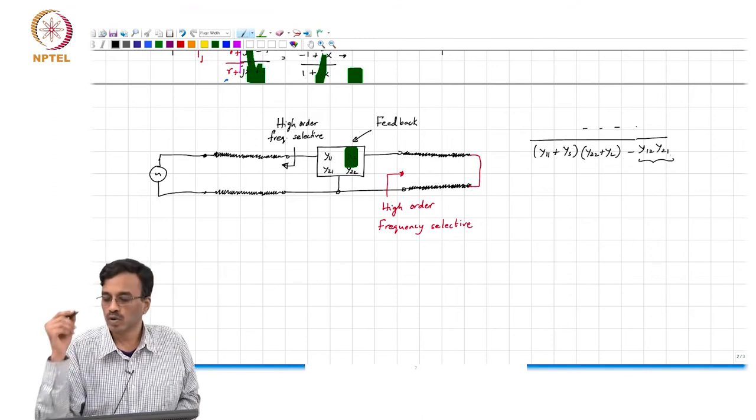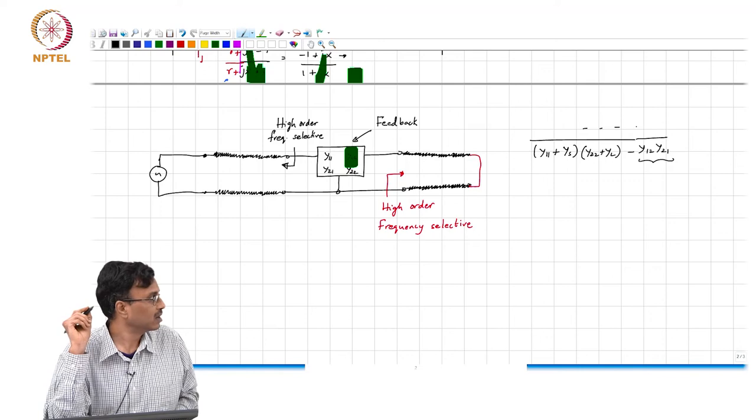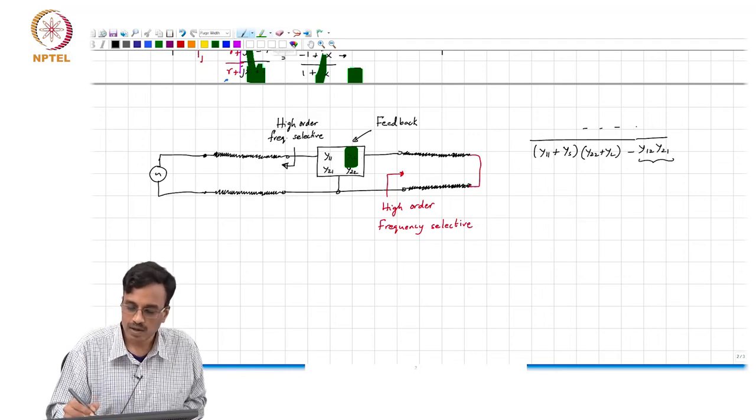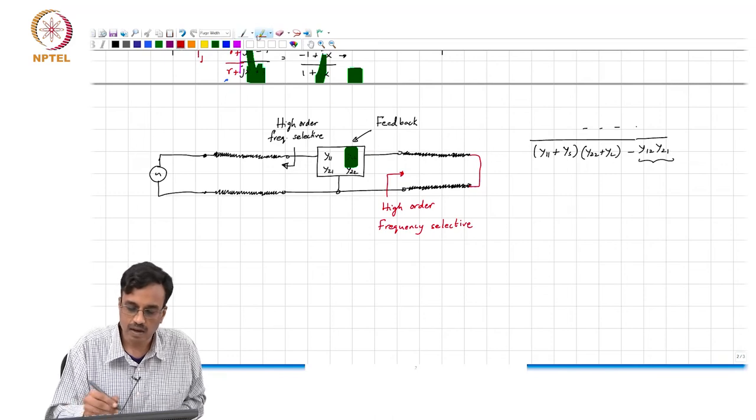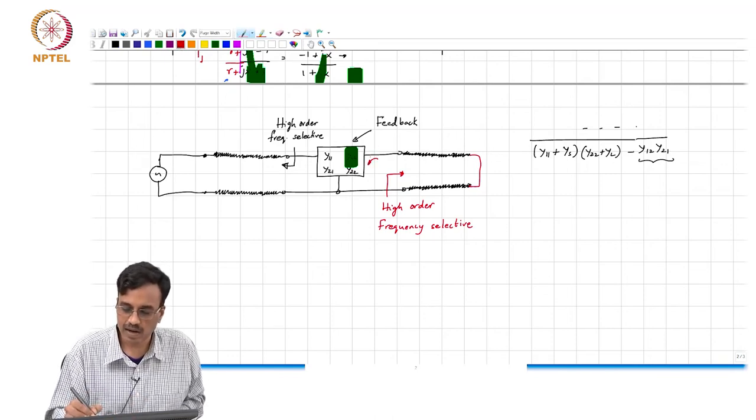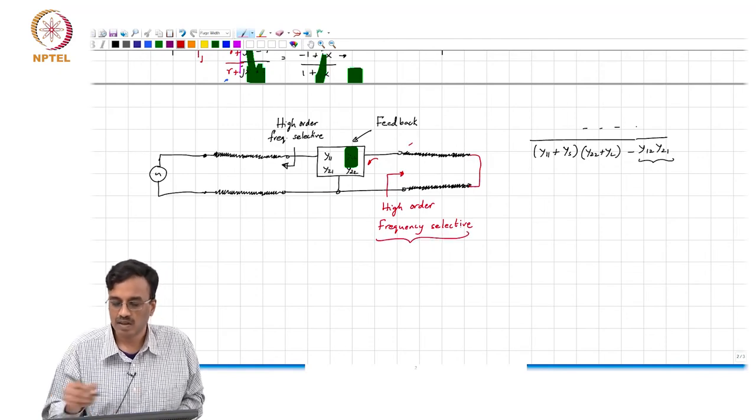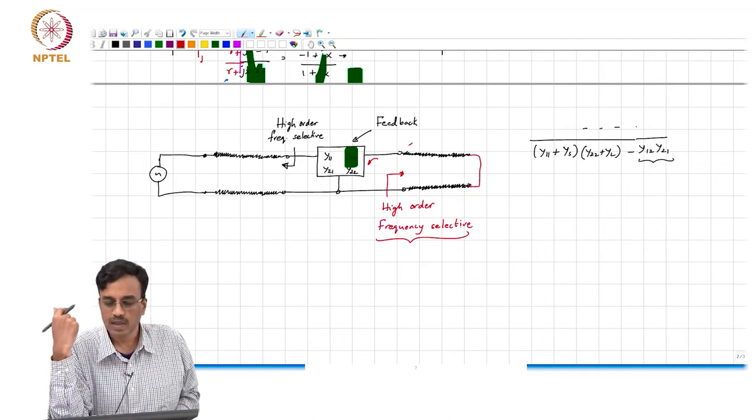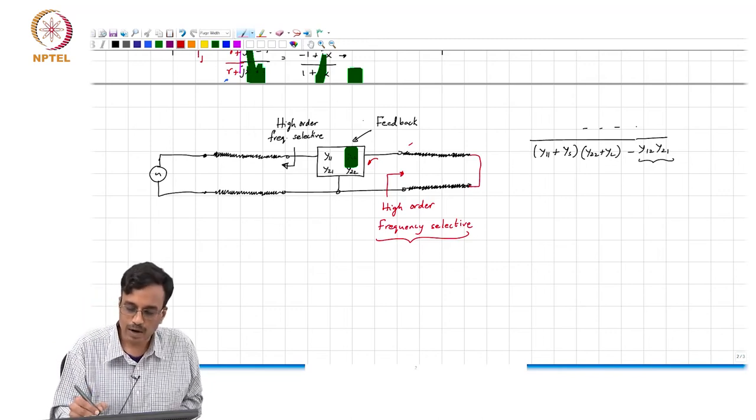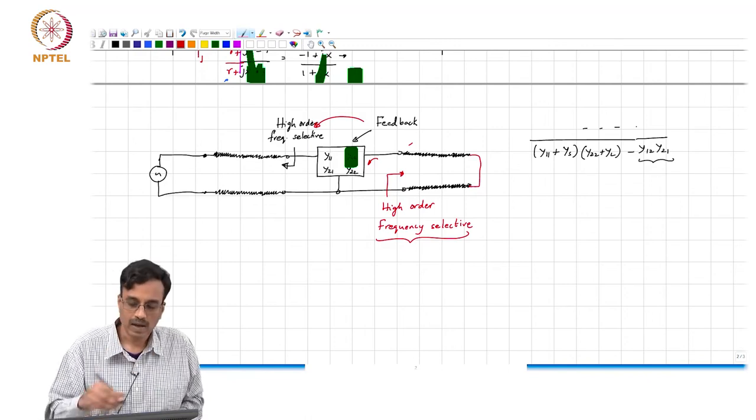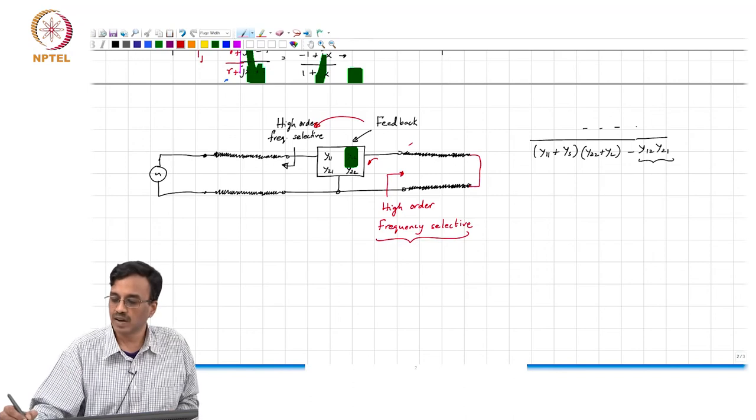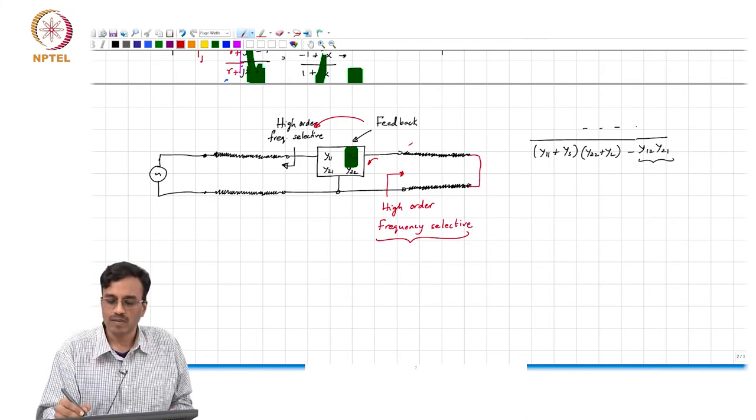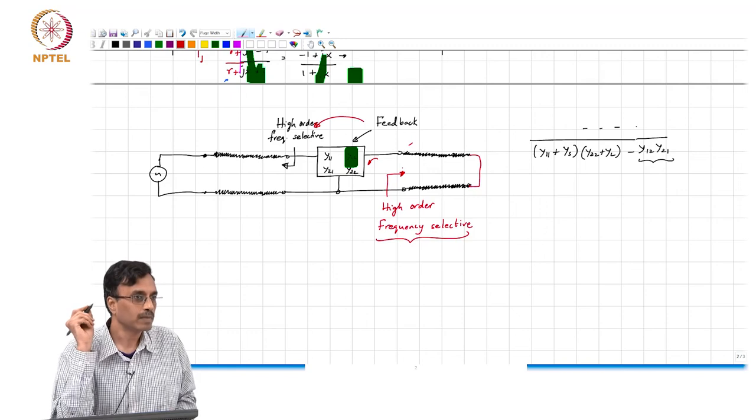So basically y12 represents feedback and so intuitively what you can think of is well you excite this network, it injects say some current here. Now that current is amplified by some block which is a very high order network right which is also very frequency selective and some part of it is fed back. And so therefore, if you think of the loop gain you can think of it as being proportional to this quantity y12 times y21 times whatever impedance that you see here.